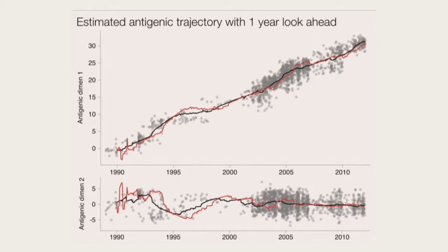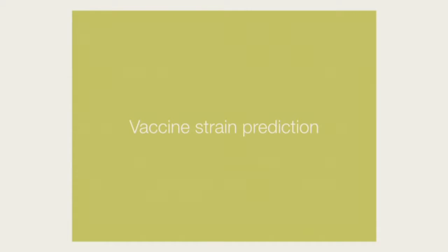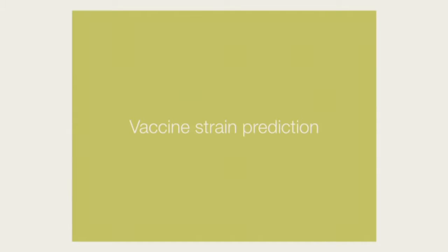We can use this in a very simple fashion: project forward where we think the population will be. At the February 2006 meeting, this is the center of the current virus population, but come winter of December 2006, this is where we think the virus population will be. That would suggest we should pick one of the gray strains that is right around that projected location as the vaccine strain.